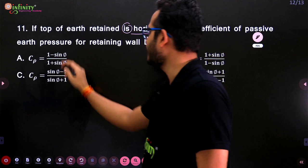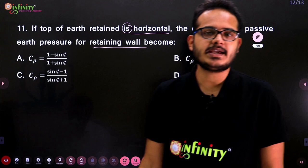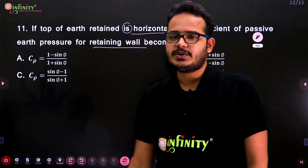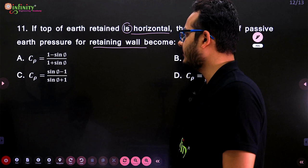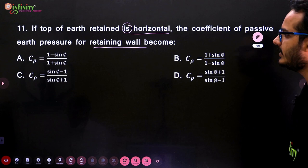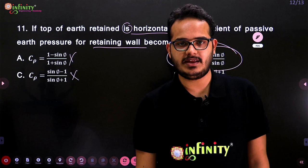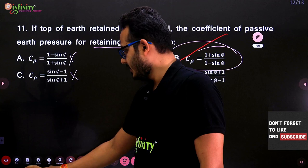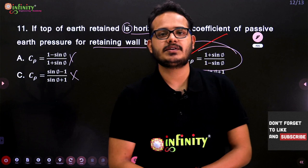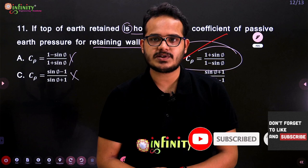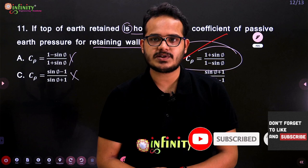Next question: If the top of earth retained is horizontal, the coefficient of passive earth pressure for a retaining wall becomes — ? We know the coefficient of passive earth pressure Kp = (1 + sin φ)/(1 − sin φ). The answer is (b). These were the questions asked in RCC for the MPSC 2019 examination. Thank you so much — we will bring more sessions and more questions related to MPSC previous years.